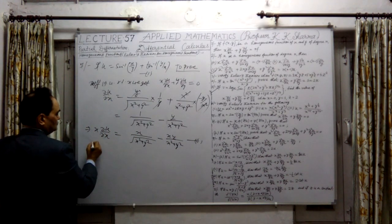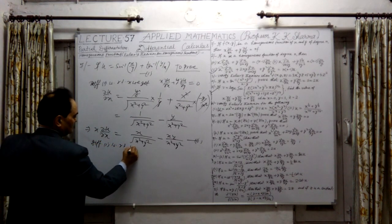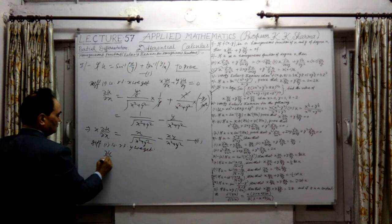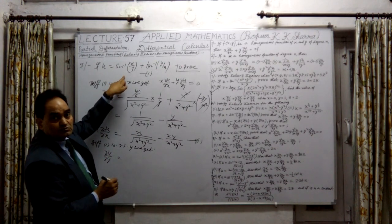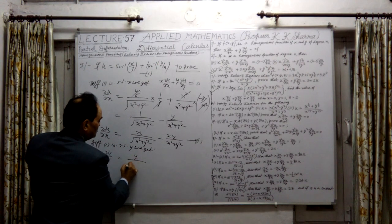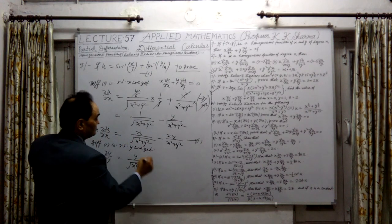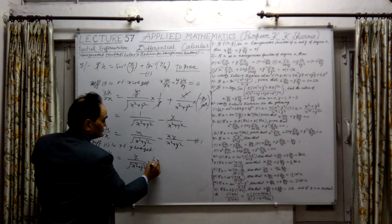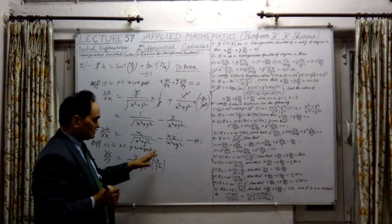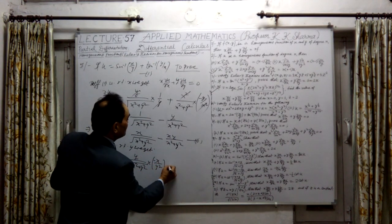Now differentiating first with respect to y — this is a partial differentiation, so here we get del u over del y. Again sin inverse x upon y is to be differentiated with respect to y. The same differentiation gives y upon under root x square plus y square. Now y is to be differentiated — minus x upon y square, because y will be taken in the numerator with power minus 2. Now plus...